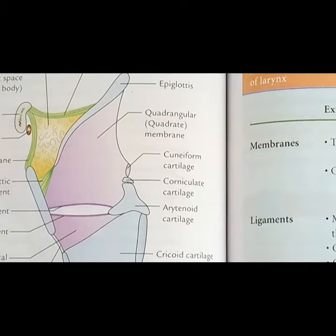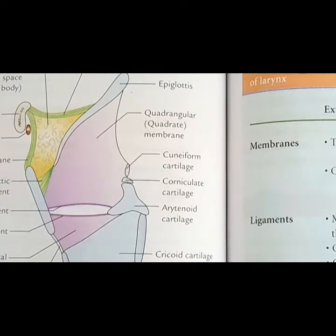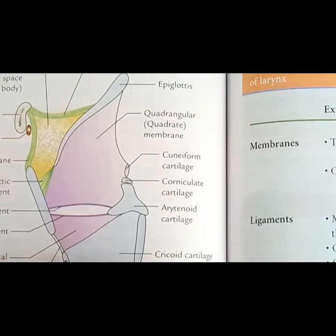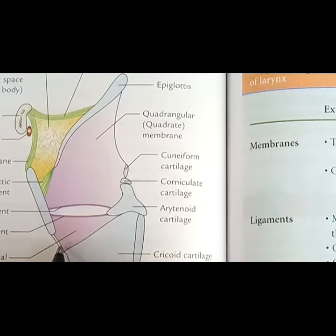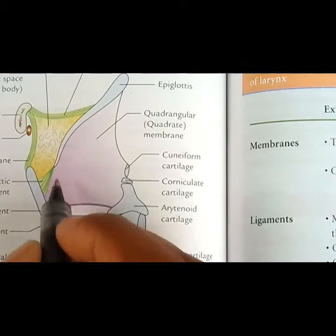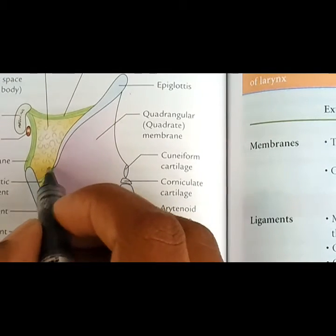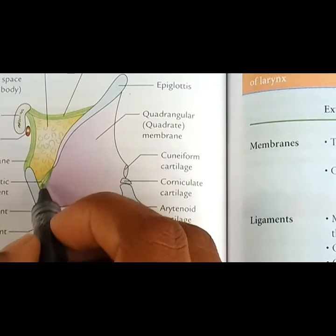The last two intrinsic structures are the cricothyroid ligament and the thyroepiglottic ligament.